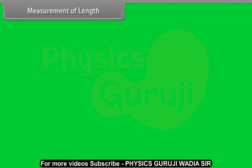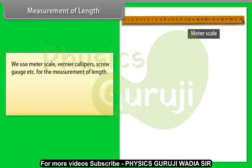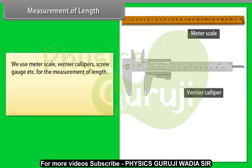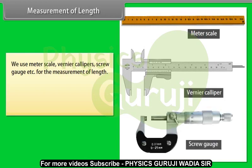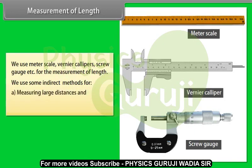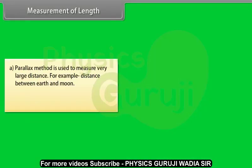Measurement of length. As you know, we use meter scale, vernier calipers, screw gauge, etc. for the measurement of length. We use some indirect methods for measuring large distances and measuring very small distances. Parallax method is used to measure very large distance, for example distance between earth and moon.